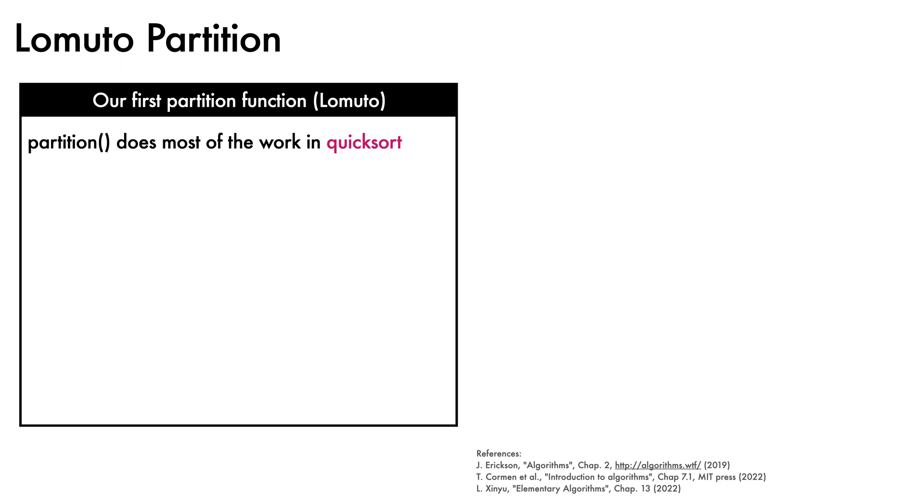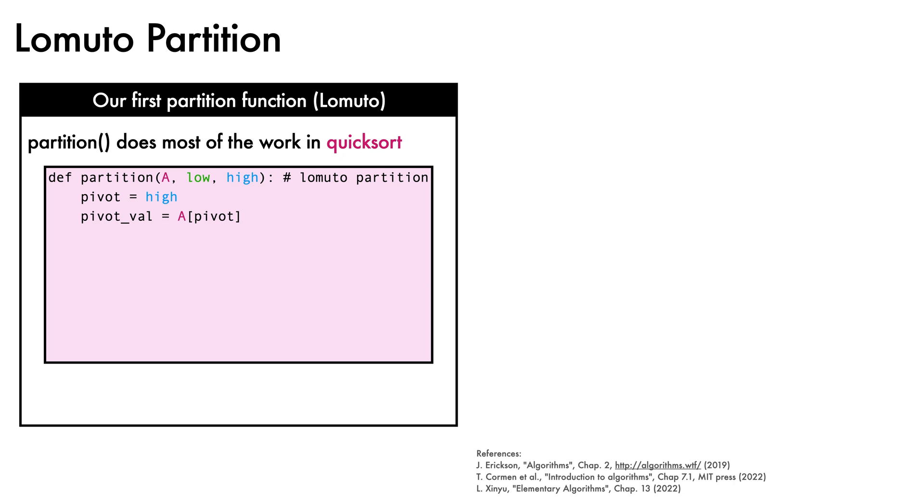We'll now look a little deeper into the partition helper function, which does most of the work in Quicksort. The first implementation we'll look at is often called the Lomuto partition function, after programmer Nico Lomuto. It takes in the array, together with the low index and high index that bound the subarray to be considered. First, a pivot is selected. Here, we're using the last element in the array, and we store its value.